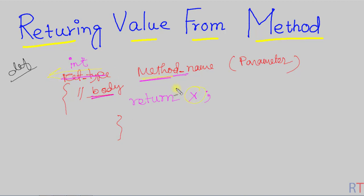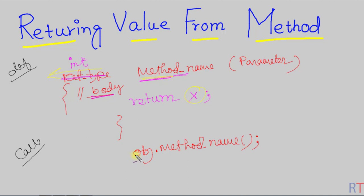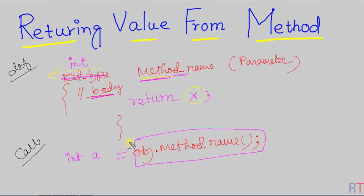At the time of calling the method, we use object dot the method name. This method call will return one value and we can store that value in a variable — like we can create an integer variable 'a' — or we can directly print that output onto the console.